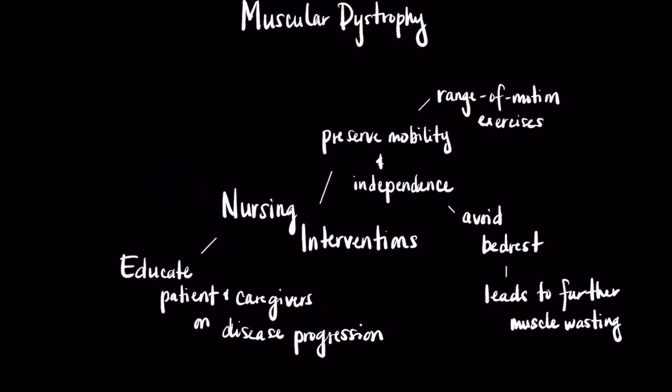With regard to the nursing interventions, the main goal for the patient is to preserve their mobility and independence. This can be accomplished through range of motion exercises and avoiding bed rest as much as possible, as this can lead to further muscle wasting. In addition, educate the patient and caregivers on the disease progression and provide any reassurances needed.